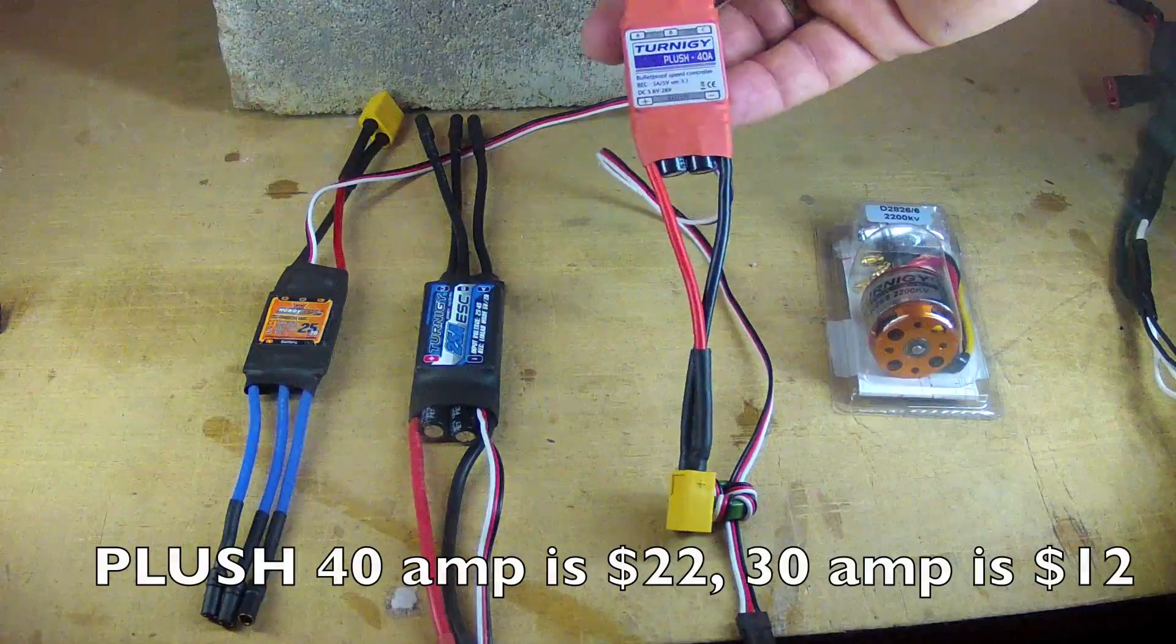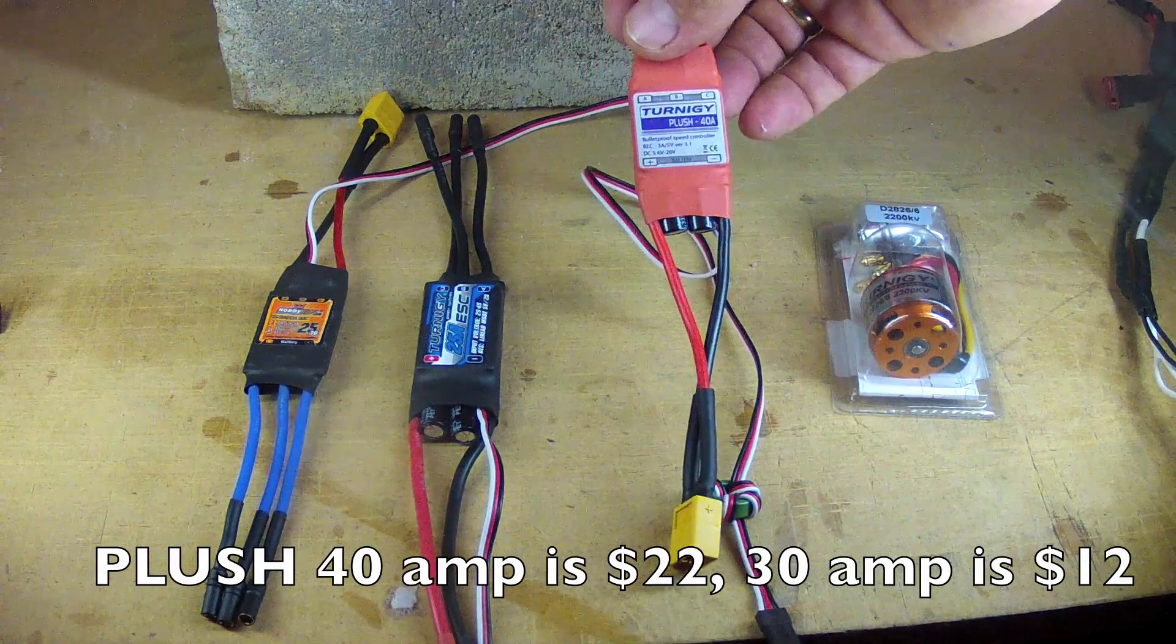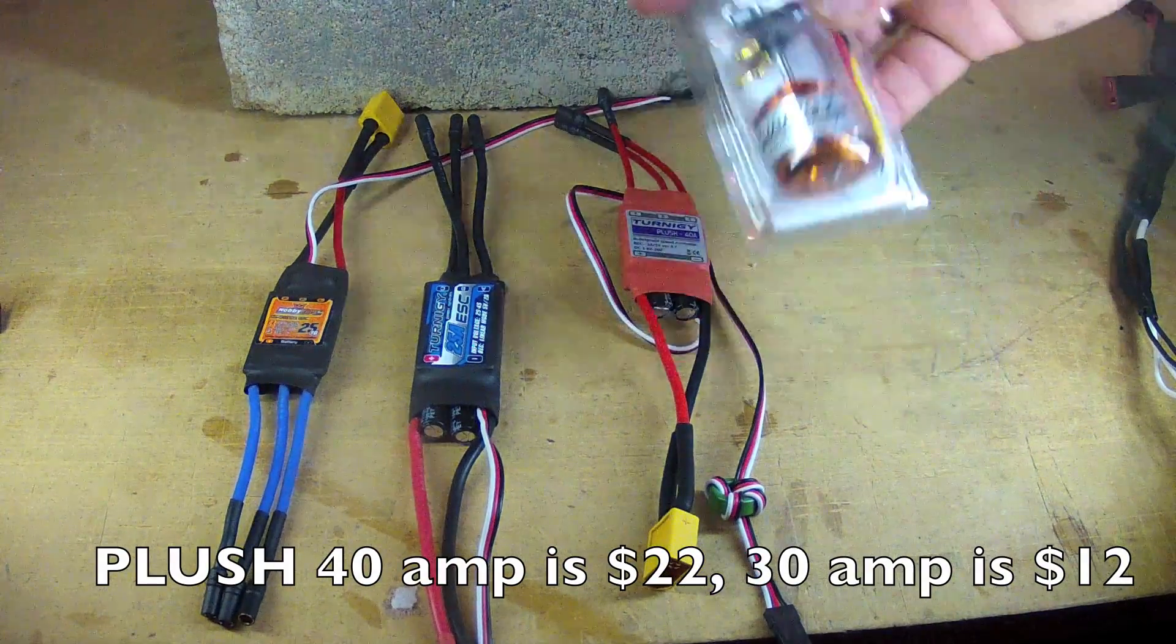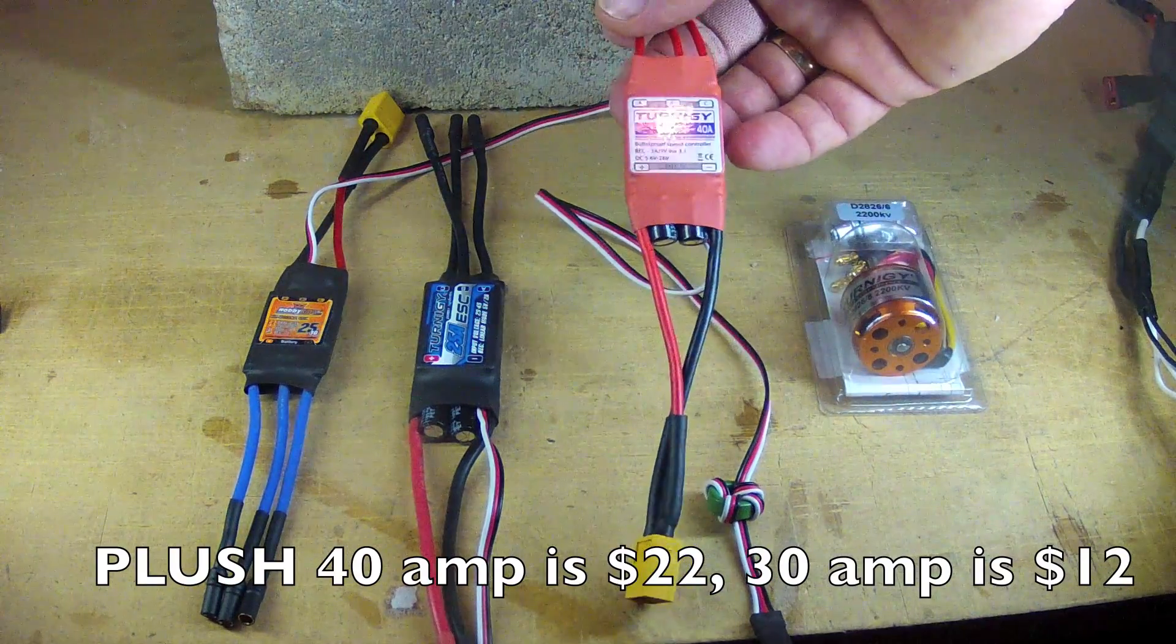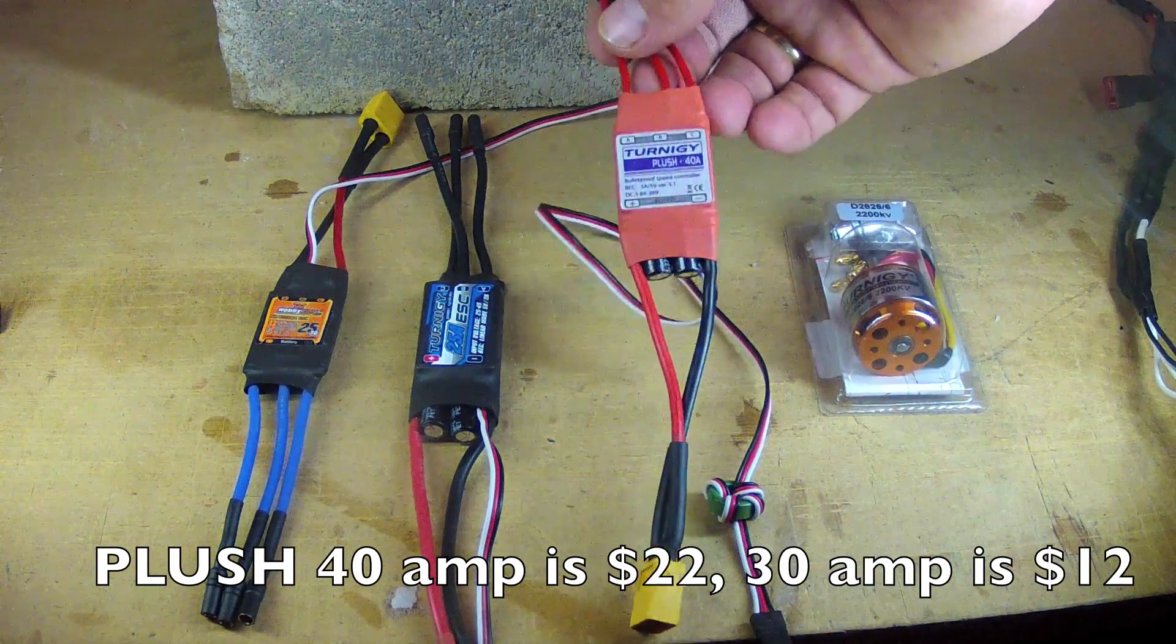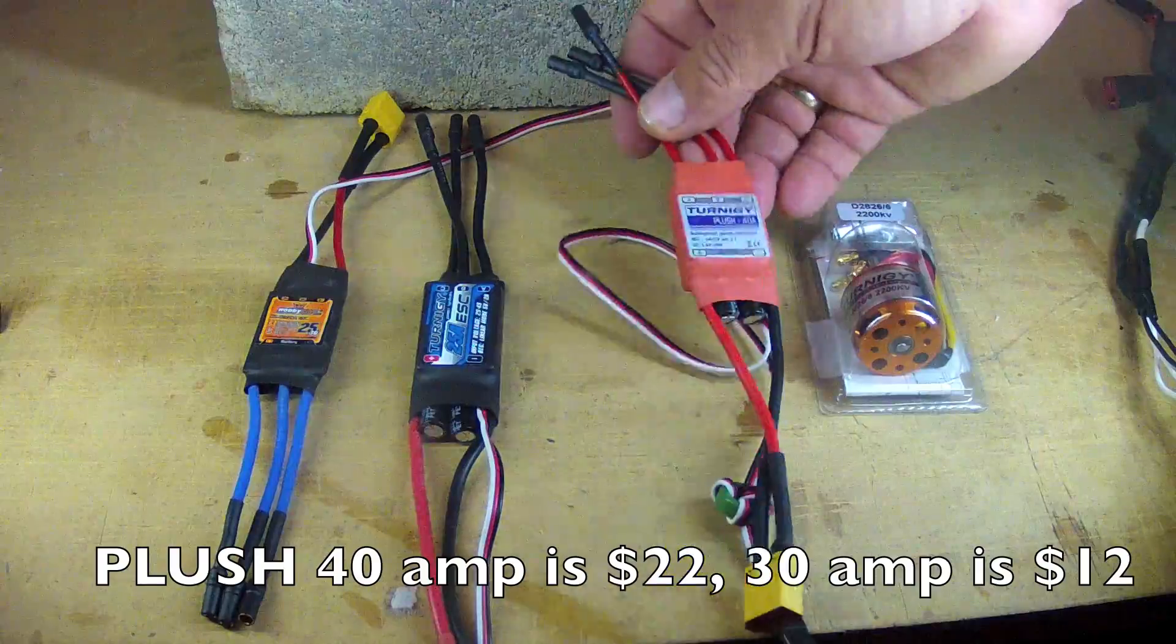For a splurge, this is $22. The Turnigy 40 amp will absolutely, definitely, always take care of this motor in any circumstances. And may be flexible to move to other plans with larger motors as well. But it does cost a bit more.